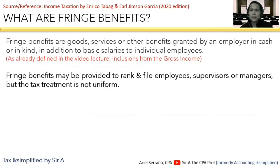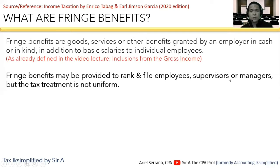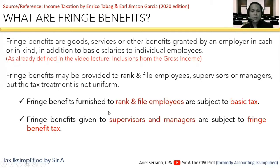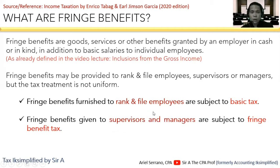Let's continue with the definition of fringe benefits and who receives them. Fringe benefits may be provided to rank and file employees or to supervisors and managers. However, the tax treatment is not uniform. Fringe benefits furnished to rank and file employees are subject to basic tax — the ordinary graduated tax rate. Meanwhile, fringe benefits given to supervisors and managers are subject to fringe benefit tax, or FBT.